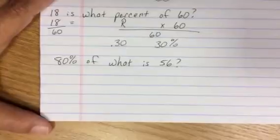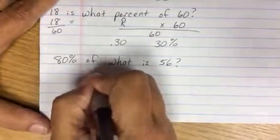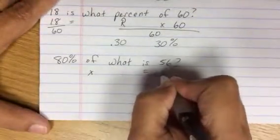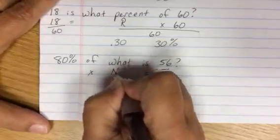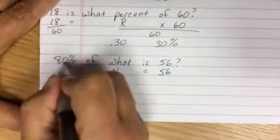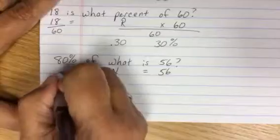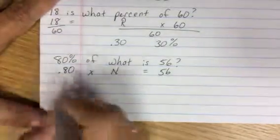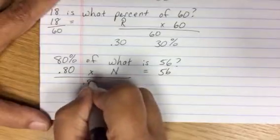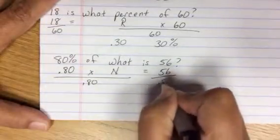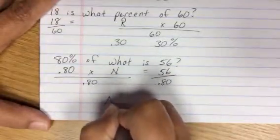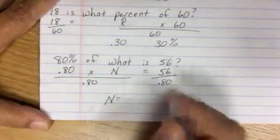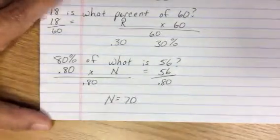Last one. Of is multiplication, is is my equals. 56 drops. My 'what,' I don't know what that is. That's 0.80. Move it into its decimal format. So I am going to divide both sides by 0.80.